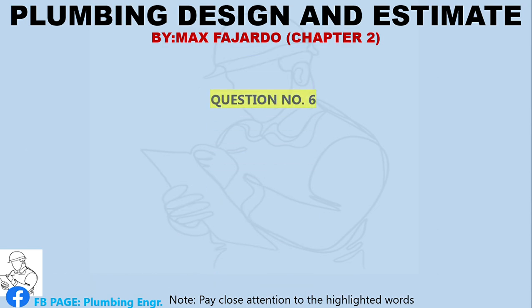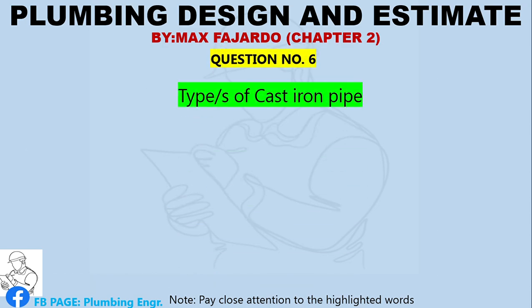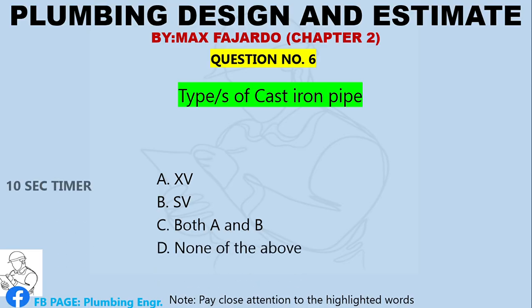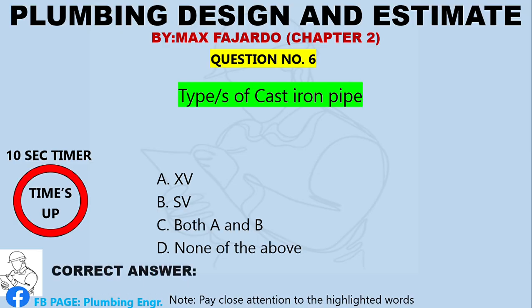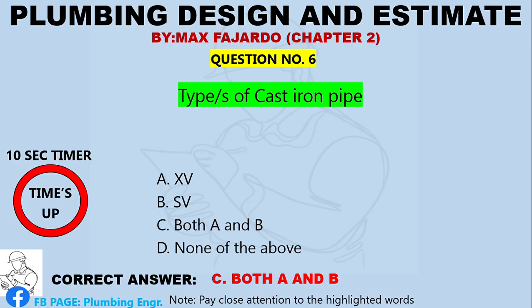Question Number 6. Type or types of cast iron pipe. A. XV. B. SV. C. Both A and B. D. None of the above. Correct answer: Letter C, both A and B.